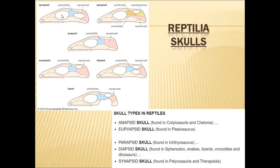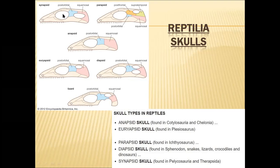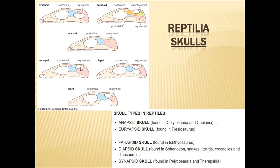In each skull, you are seeing a bigger hole in the anterior region — this is called the orbital, where the eyeball will be placed. This is not considered a temporal fenestra. The temporal fenestrae are the holes present on the temporal region. Here you can see one hole on one side, and another skull is not having any hole. This is one hole, and another is having two holes. We are seeing only one side of the skulls, so on the other side also they will have an orbital and another set of temporal fenestrae.